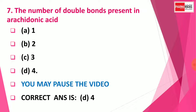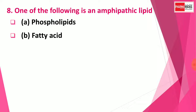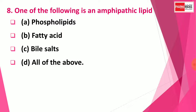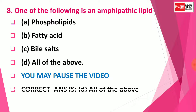Question 8: One of the following is an amphipathic lipid — Option A: Phospholipid, Option B: Fatty acid, Option C: Bile salts, Option D: All of the above. You may pause the video to think about the answer. The correct answer is Option D: All of the above. Amphipathic lipids include phospholipids, fatty acids, and bile salts.